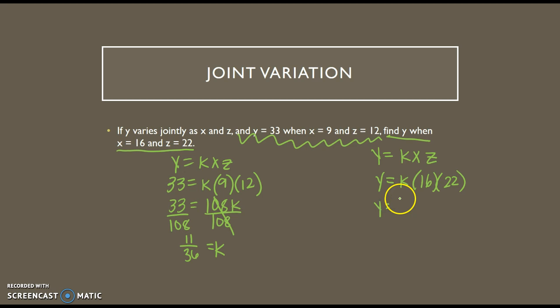So we have y equals 11 over 36 times 16 times 22, which ends up being a big fraction. That simplifies down nicely to 968 over 9, which isn't a very pretty number, but it's still an acceptable answer.